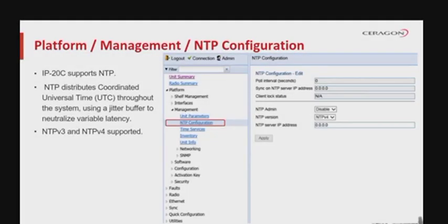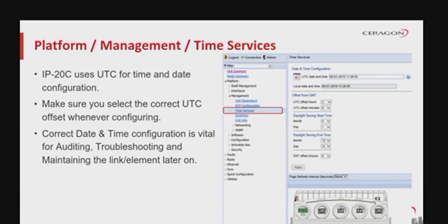IP20C supports Network Time Protocol. NTP is a networking protocol for clock synchronization between computer systems over packet-switched, variable-latency data networks. NTP distributes Coordinated Universal Time, or UTC, throughout the system using a jitter buffer to neutralize variable latency. Versions 3 and 4 of this protocol are supported by the IP20 platform. You can configure date and time parameters under Platform > Management > Time Services. IP20C uses UTC for time and date configuration, and the user must input the correct UTC offset from GMT for valid date and time information.